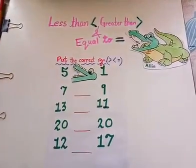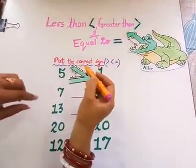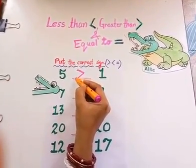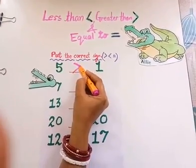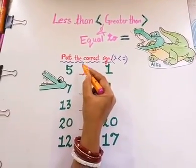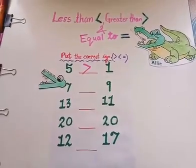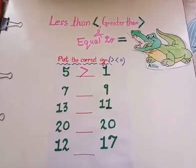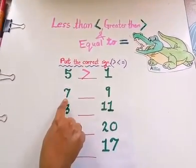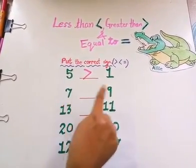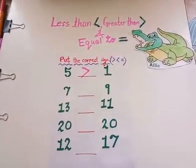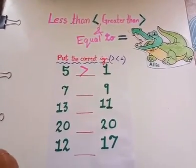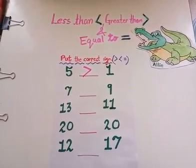For greater than sign, we put this sign. Like Ellie's mouth, the open end goes to the bigger number. Now tell me children, which number will Ellie eat? Number 7 or number 9? Ellie always eats the bigger number. Right, Ellie will eat number 9.